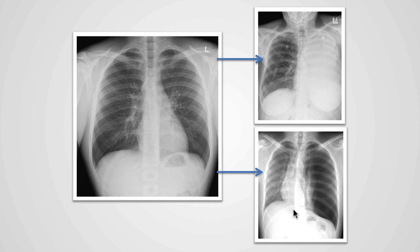In this example, we see that the left hemithorax is too black. The reason it is too black is because there is air outside of the lung. We will learn more about this in later presentations, but what this patient has is a pneumothorax. And because the heart and mediastinal structures are shifted to the right side, this is called a tension pneumothorax.